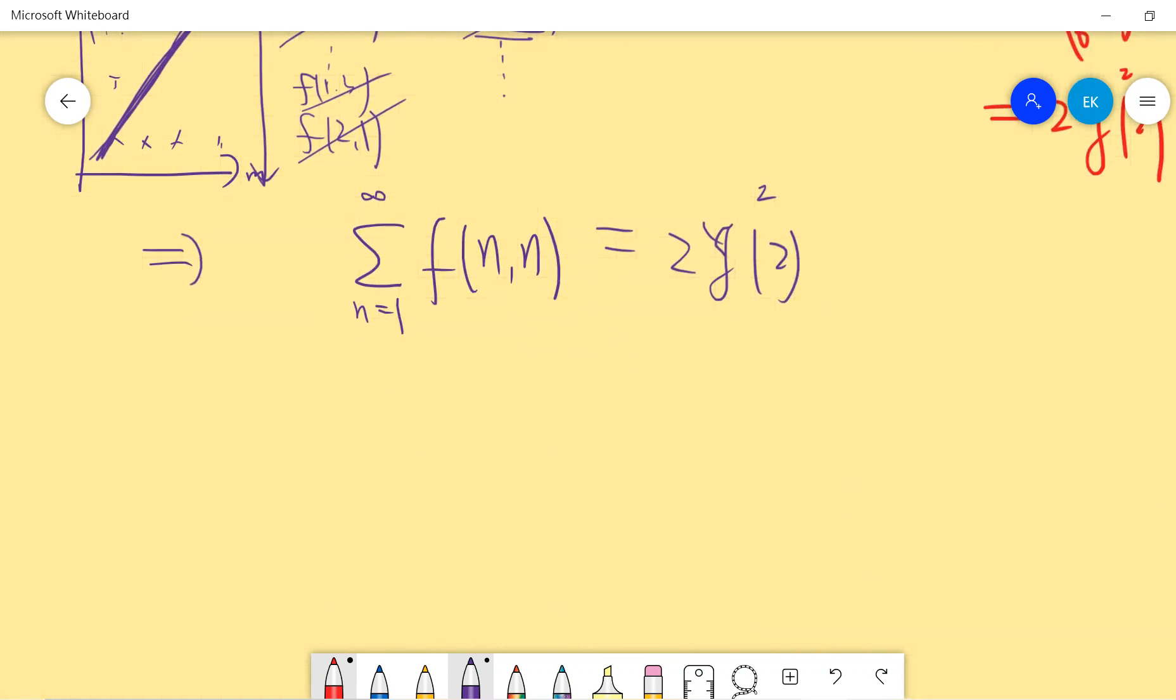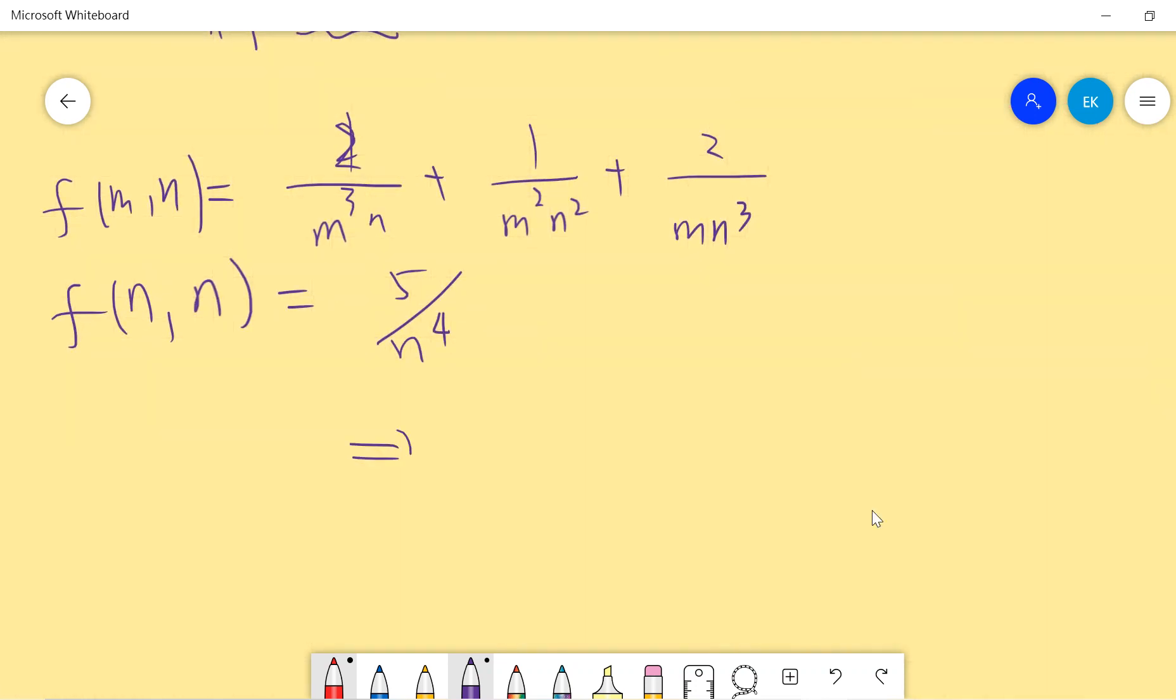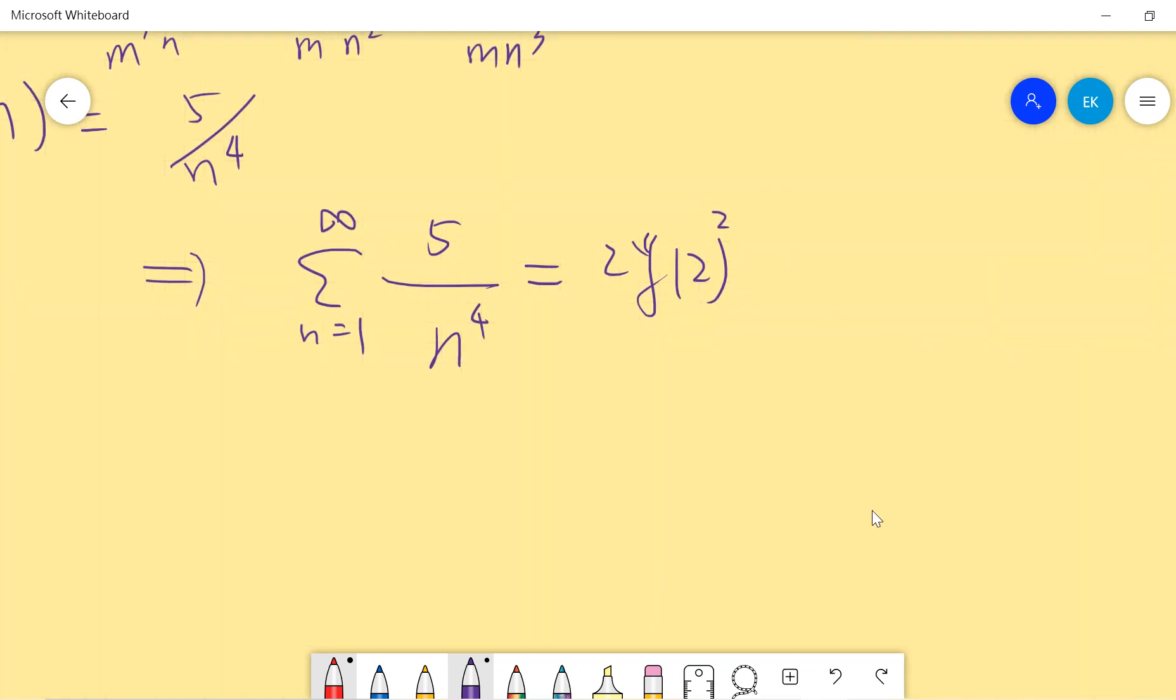So now the question is what is actually f(n,n)? Let me write it again. Suppose when m equals n, then we have 5 over n to the fourth. So we have an amazing result that the summation from n equals 1 to infinity of 5 over n to the fourth equals 2 times zeta 2 squared.